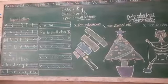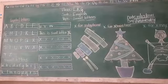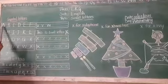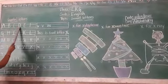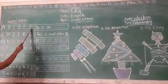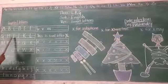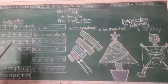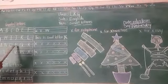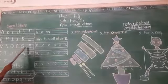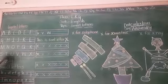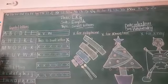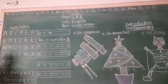In the previous class, we learned how to write these letters in four lines. Capital letters: A, B, C, D, E, F, G, H, I, J, K, L, M, N, O, P, Q, R, S, T, U, V, W, X, Y, Z.